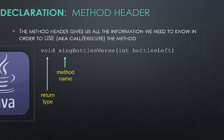The method output description precedes the name of the method. This is the return type, and it always comes in front of the name of the method. Since there will not be any output produced by Sing Bottles Verse method, this has a void return type. It's a procedural, stand-alone method.